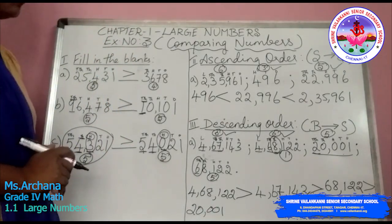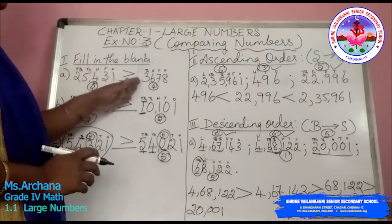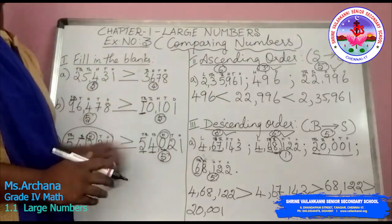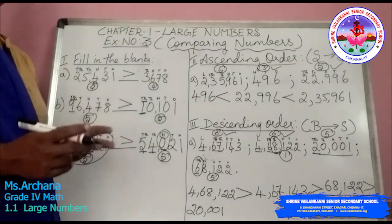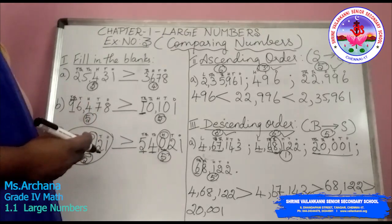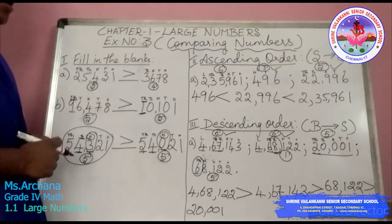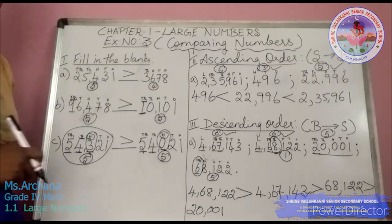This is how you compare two sets of numbers or more than two sets of numbers. Using these two rules, you can compare any numbers. Hope you have understood. Thank you.